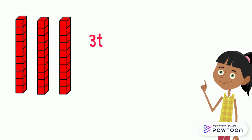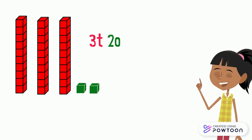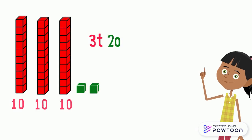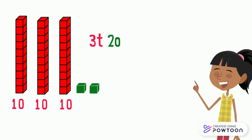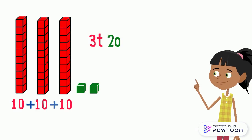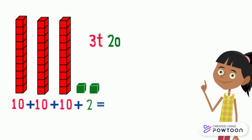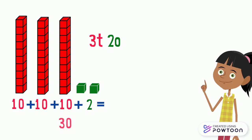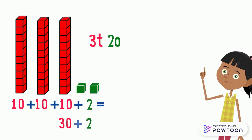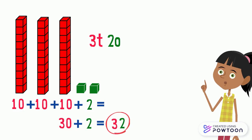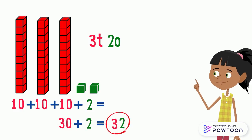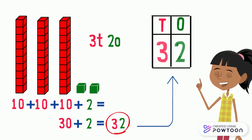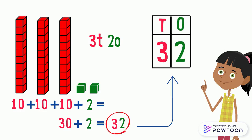We have 3 tens and 2 ones. Each 1 ten equals 10, so 10 plus 10 plus 10 plus 2. 3 tens equals 30 and 2 ones equals 2, so 30 plus 2 equals 32. In the number 32 there are 3 tens and 2 ones.